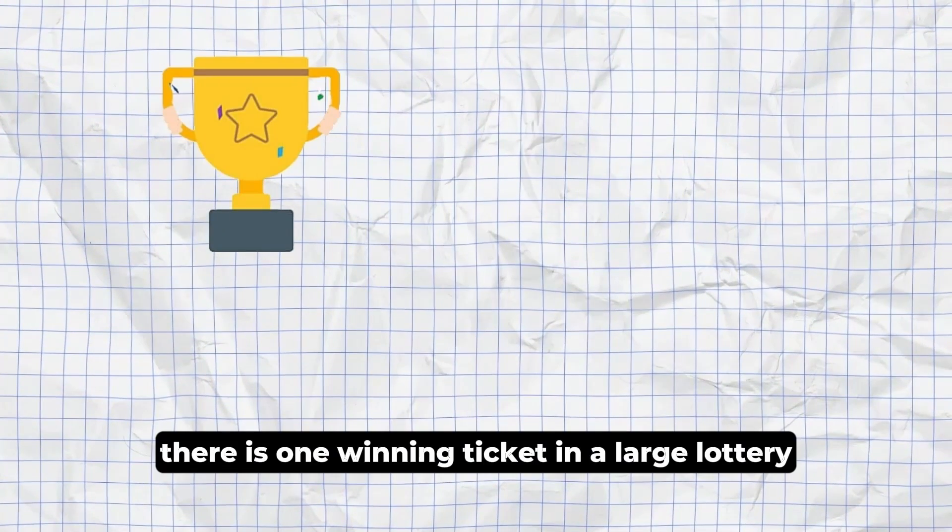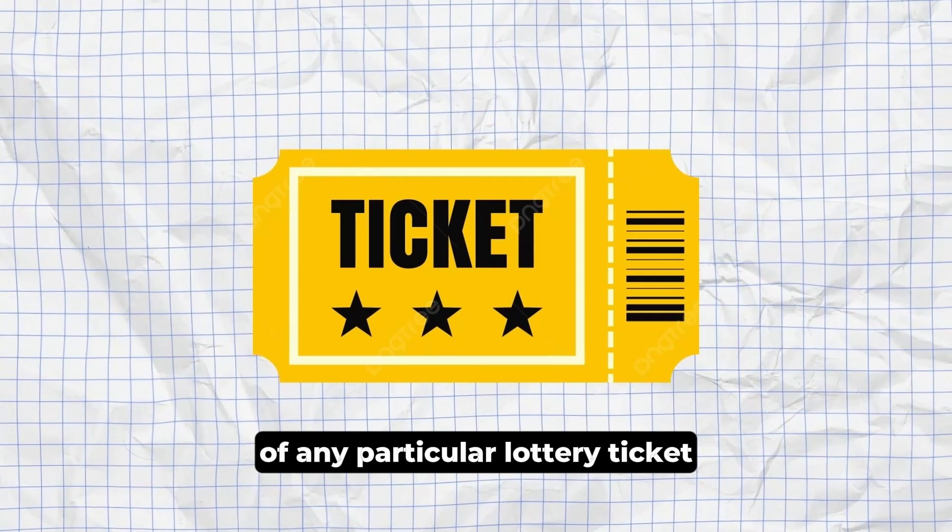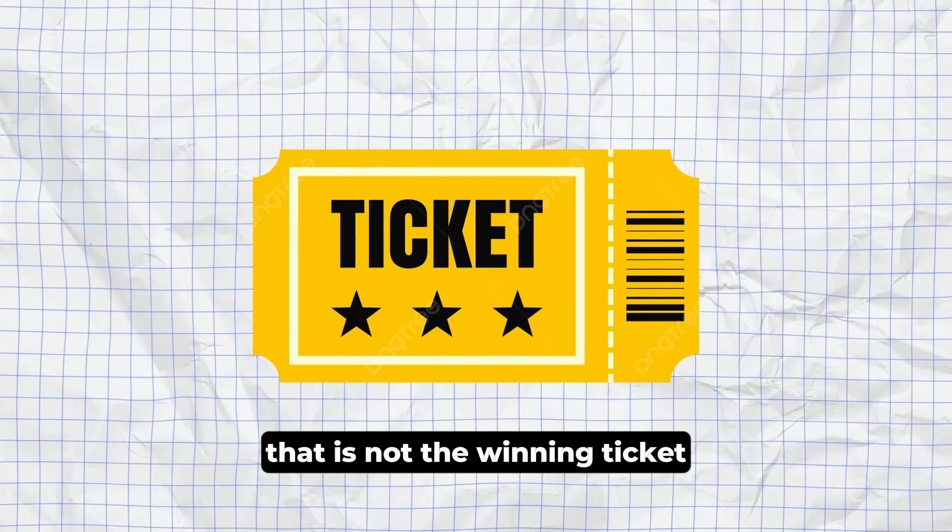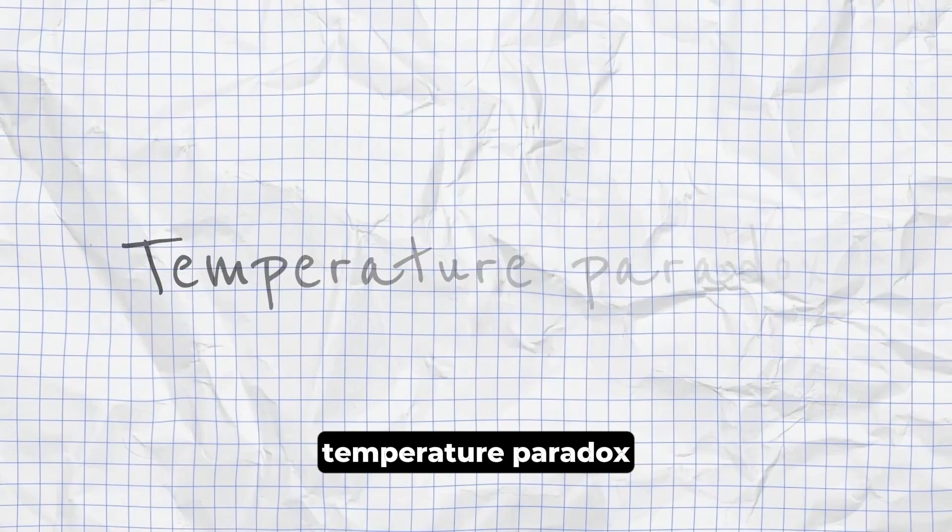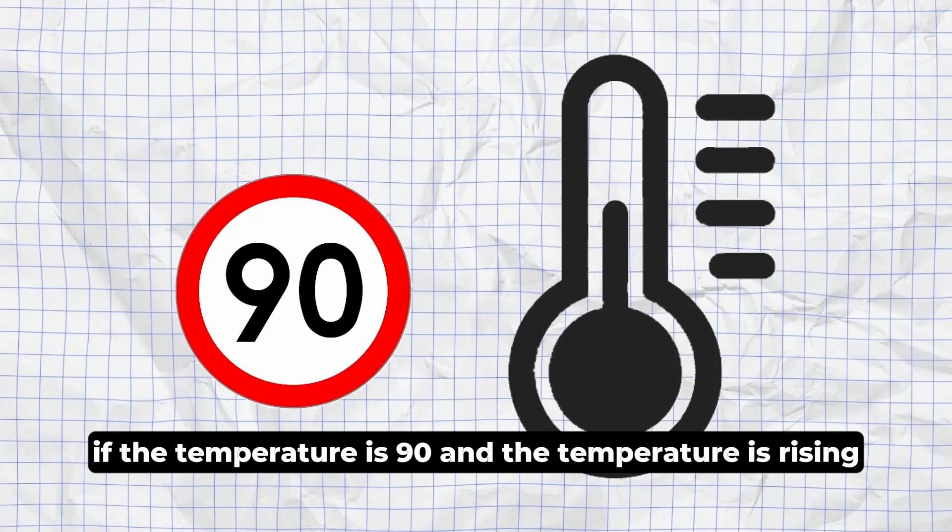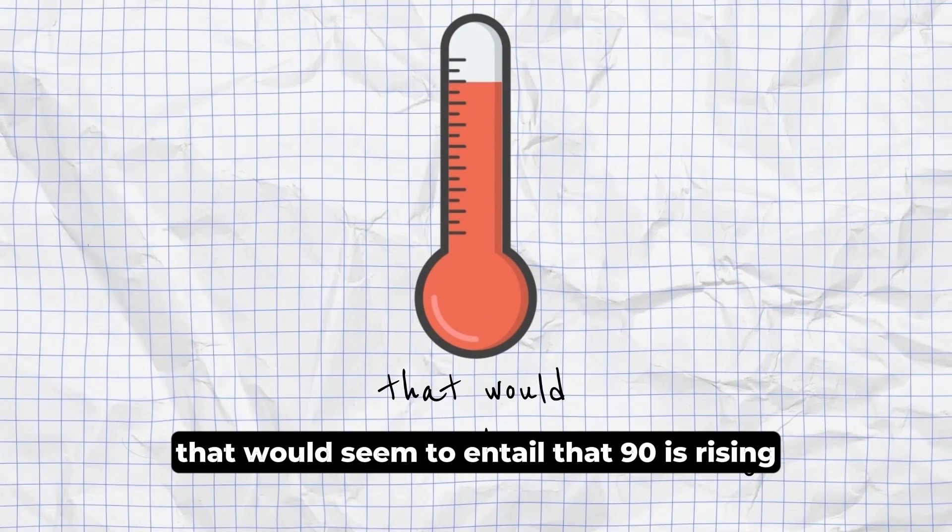Lottery Paradox. If there is one winning ticket in a large lottery, it is reasonable to believe of any particular lottery ticket that it is not the winning ticket. But it is not reasonable to believe that no lottery ticket will win. Temperature Paradox. If the temperature is 90 and the temperature is rising, that would seem to entail that 90 is rising.